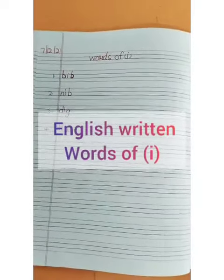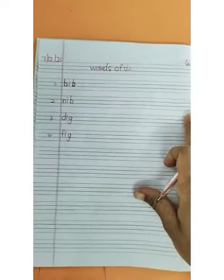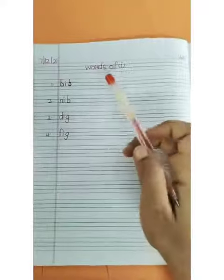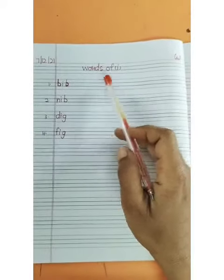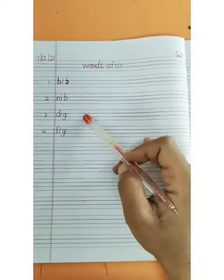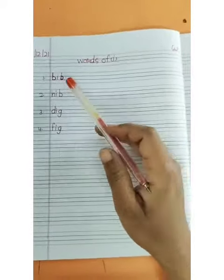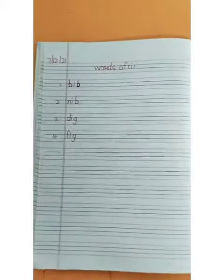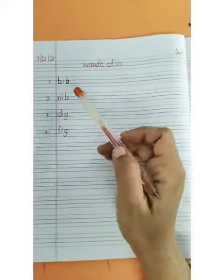Good morning children. Welcome to your English class. Today we will learn how to write words with the letter I on your notebook. So you have to write these four words on your notebook.